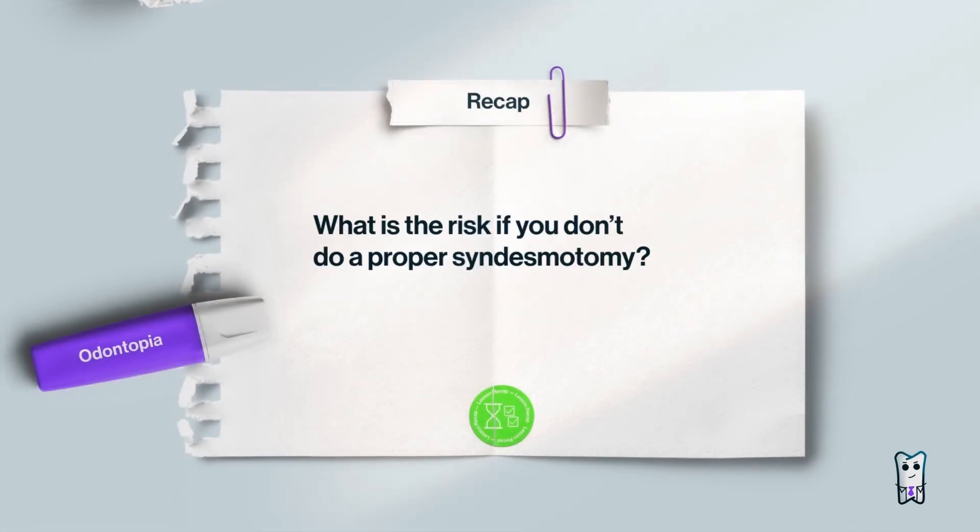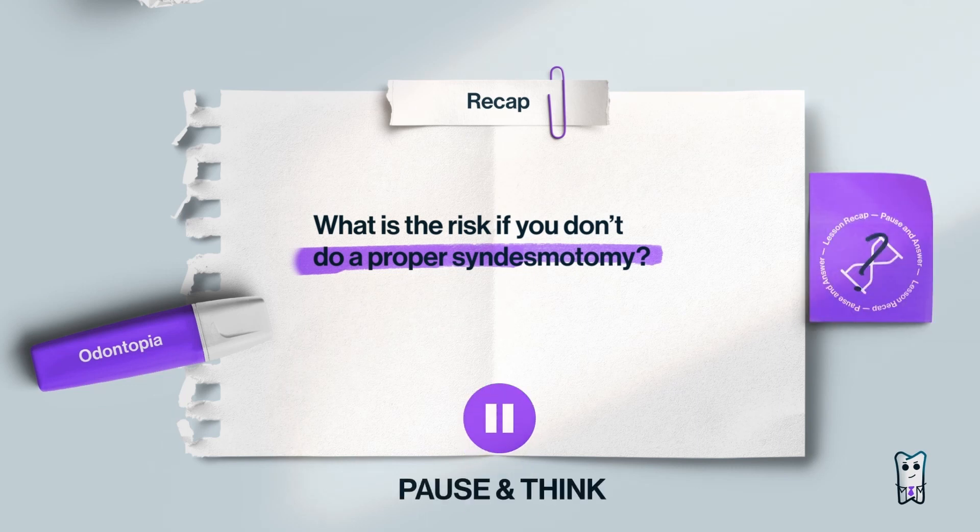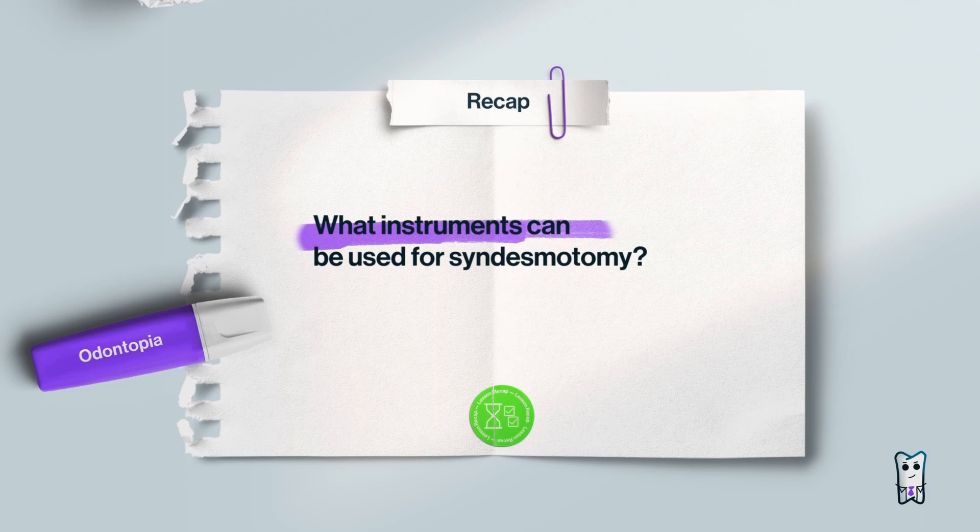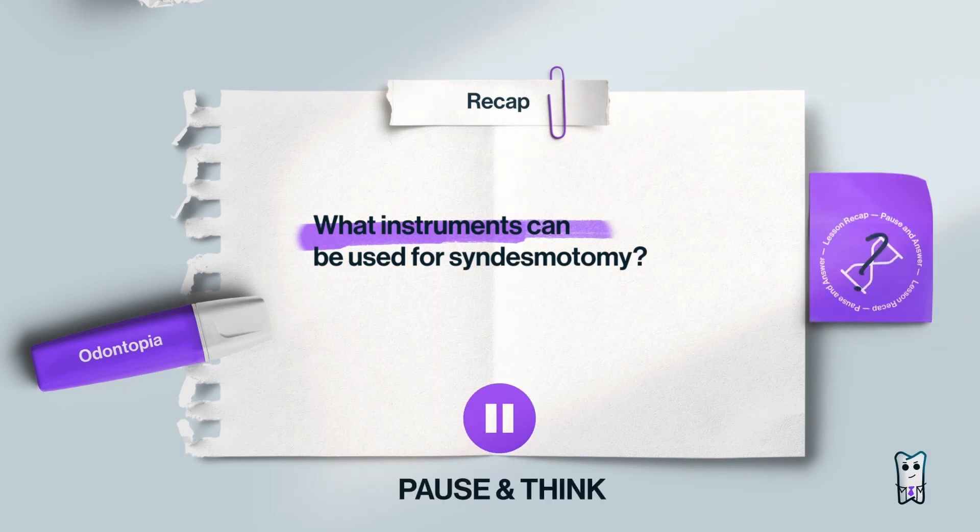What is the risk if you don't do a proper syndesmotomy? What instruments can be used for syndesmotomy? What is traction and how would you do it for maxillary first molar? What about mandibular incisors?